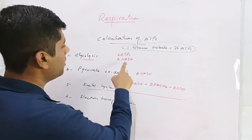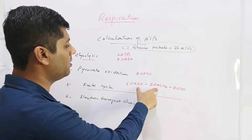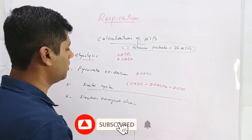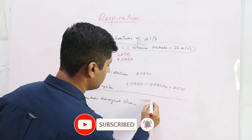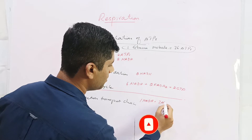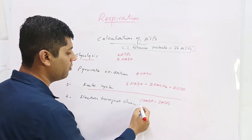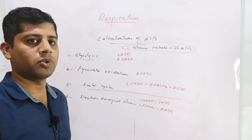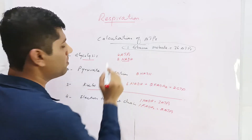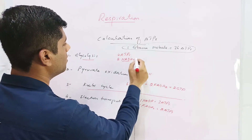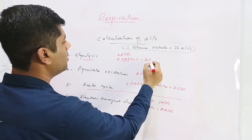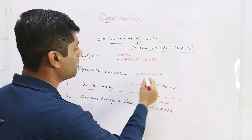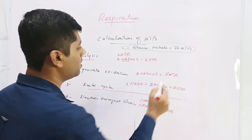The NADH and FADH2 molecules store energy, and this stored energy is released during the electron transport chain. One NADH produces three ATPs in the electron transport chain, and one FADH2 molecule produces two ATPs. So the two NADH from glycolysis produce six ATPs, and the two NADH from pyruvate oxidation also produce six ATPs.